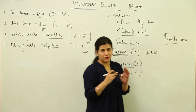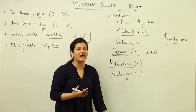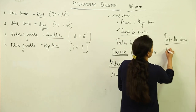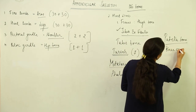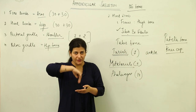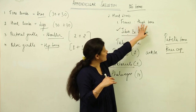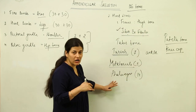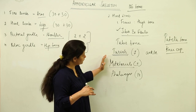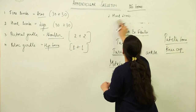The patella is the kneecap. It is responsible for the articulation at the knee, where the femur — the thigh bone — comes and articulates from the back side. In this way, we have 30 bones in the hind limb.